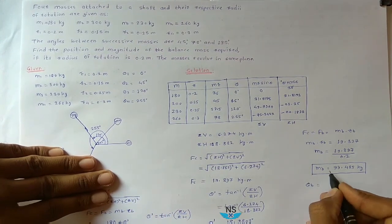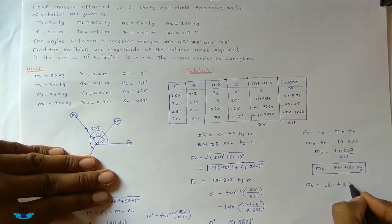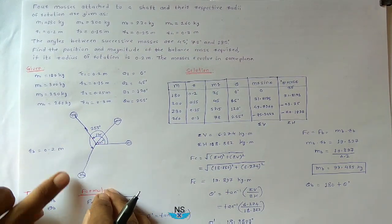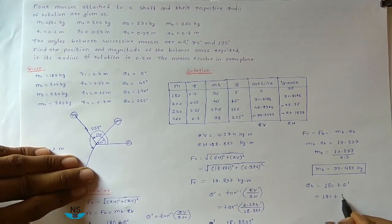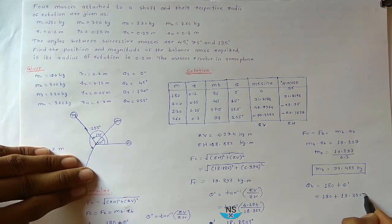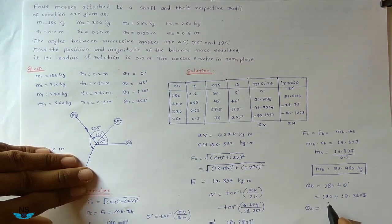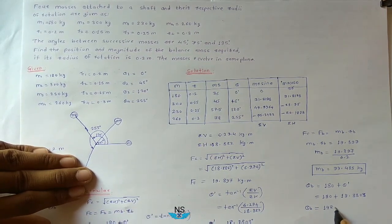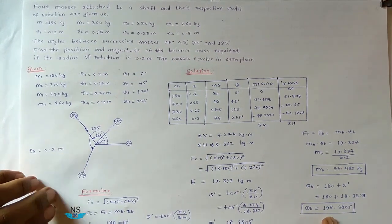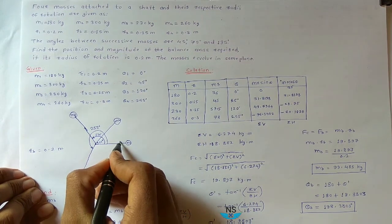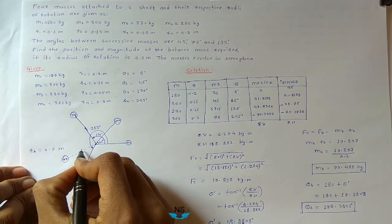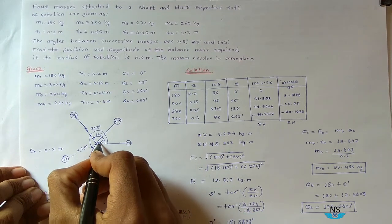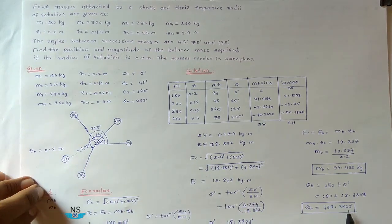Now the position of this balancing mass: theta_b equals 180 degrees plus theta dash, which is 180 plus 18.3803 degrees. So theta_b becomes 198.3803 degrees from the positive x-axis. The balancing mass Mb is at radius 0.2 meter and at position theta_b equal to 198.3803 degrees.